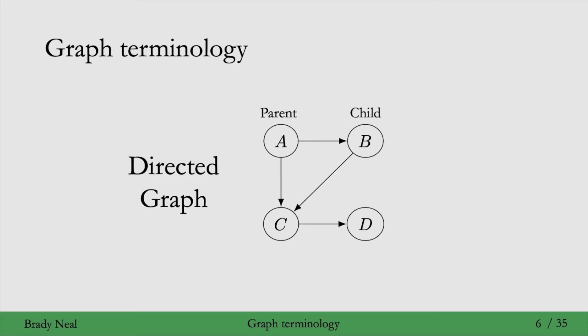A lot of ancestry-themed terminology is used in graphs. So for example, in this directed graph, A is the parent of its child B. So a parent is any node that has an edge going out of it. And then the child is the corresponding node that has that edge going into it.